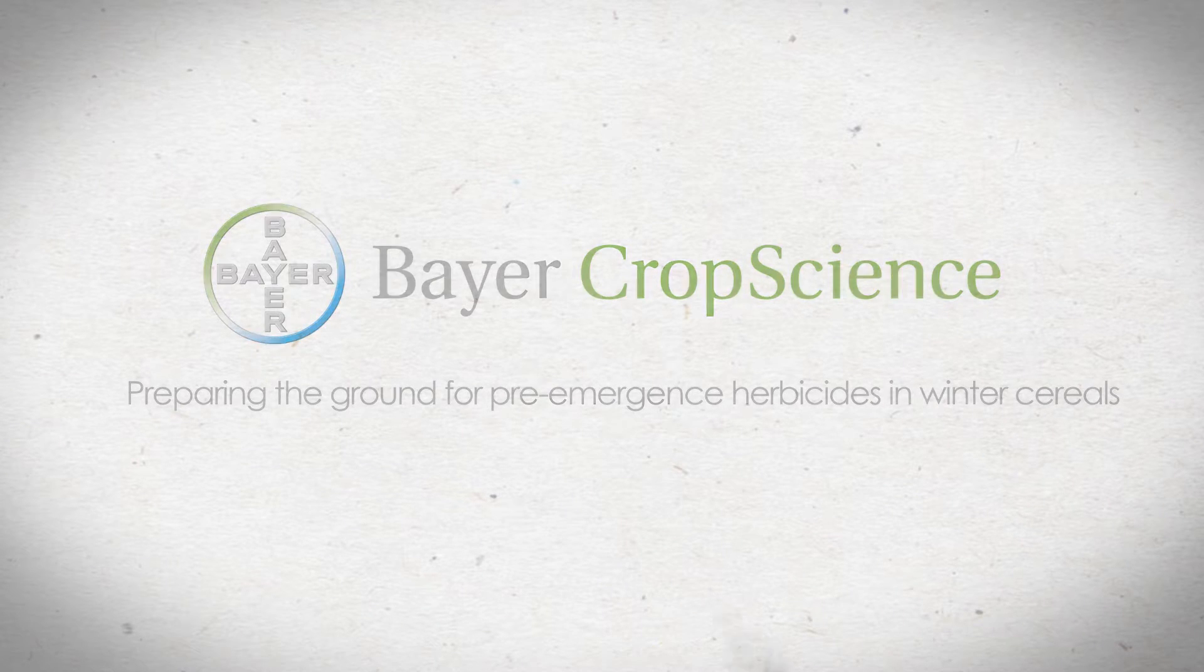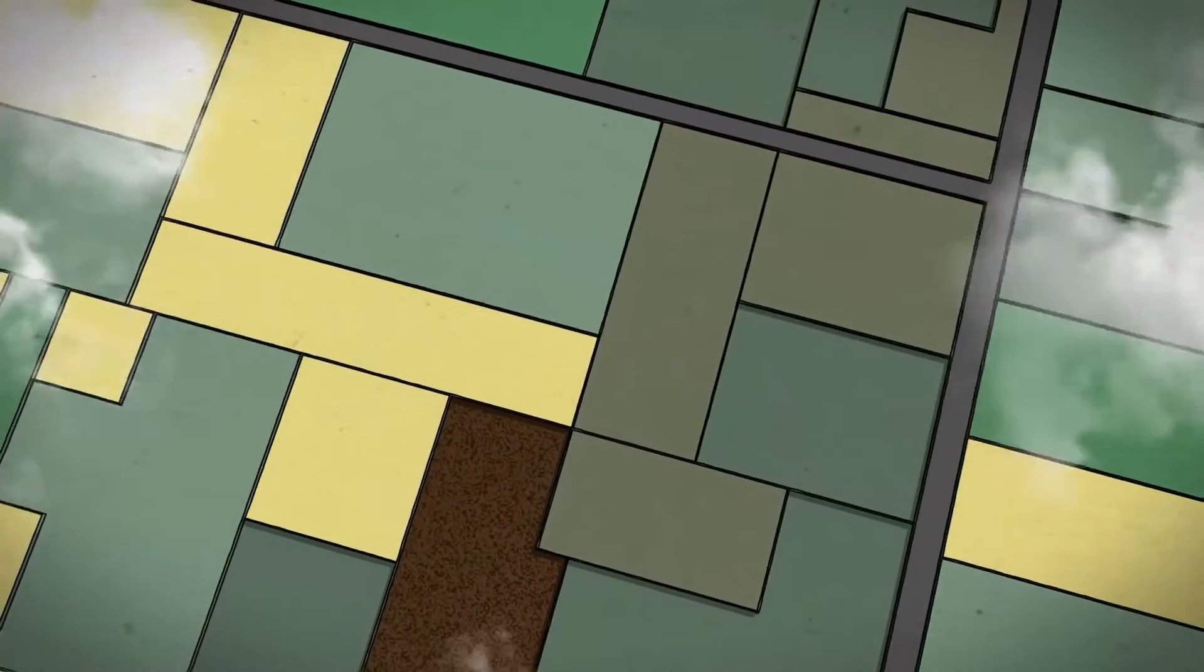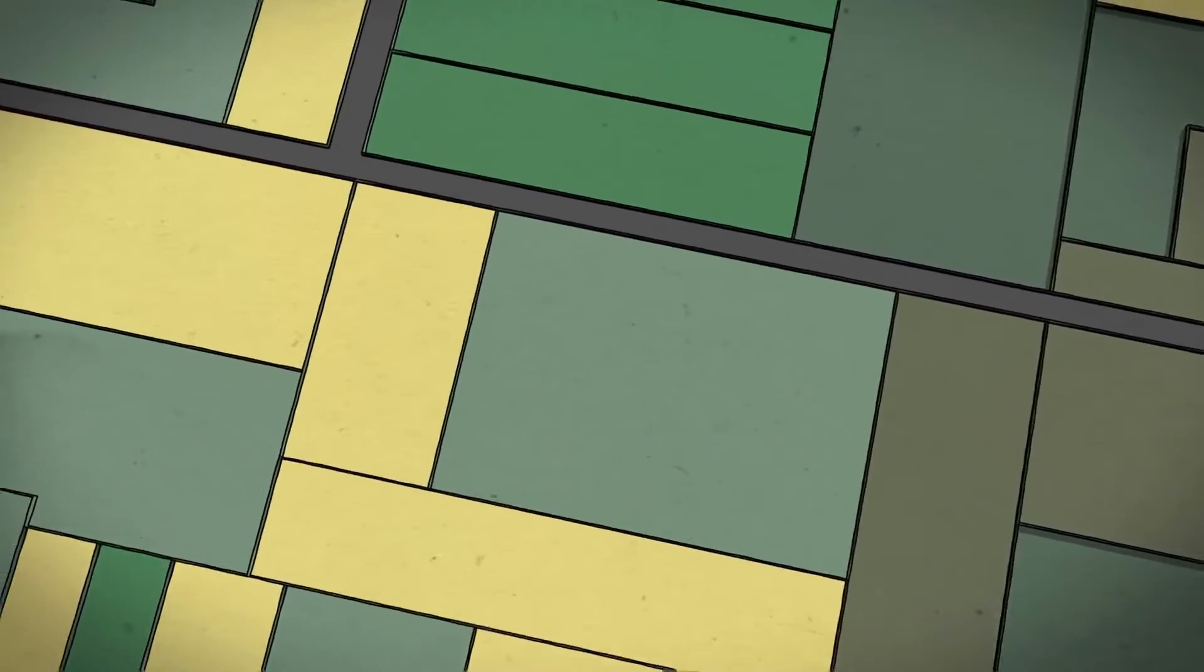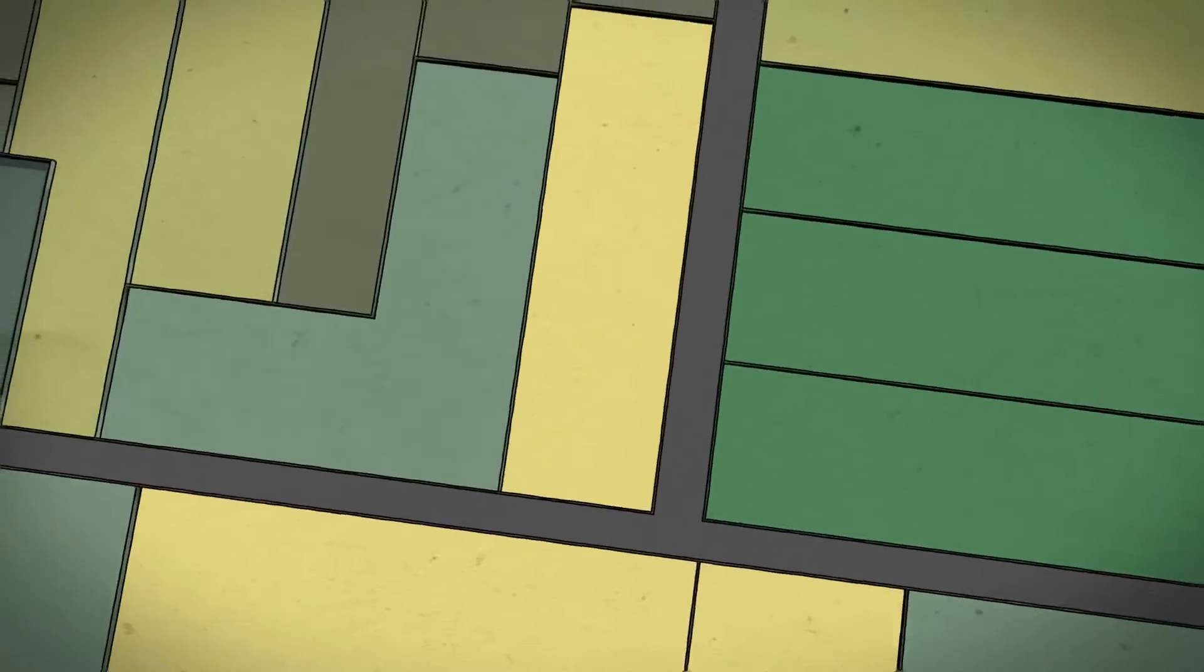Pre-emergence herbicides are the foundation of blackgrass control. They provide the most robust level of control and optimized conditions for wheat to emerge without competition.